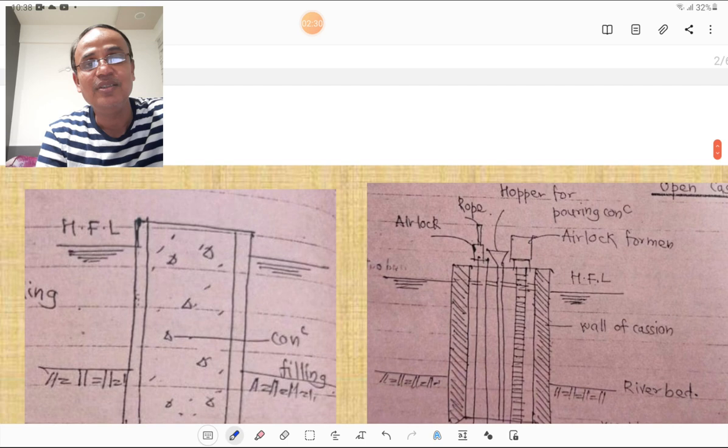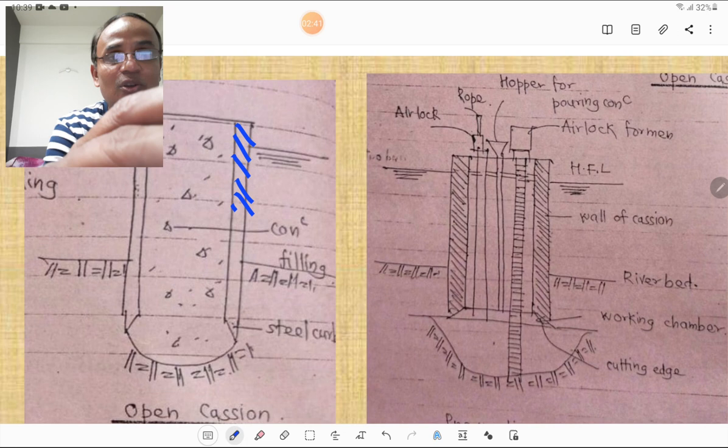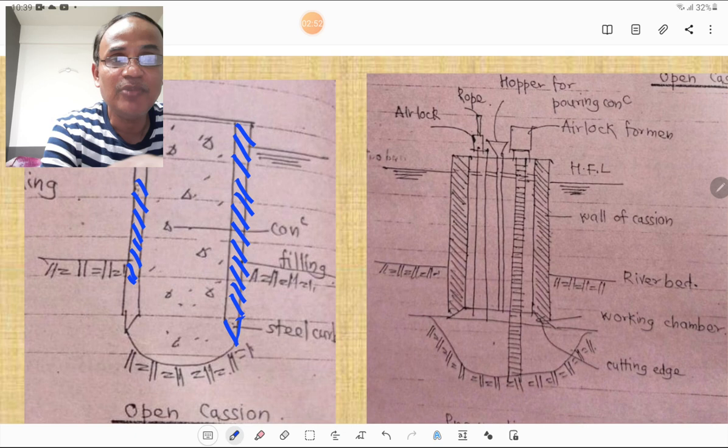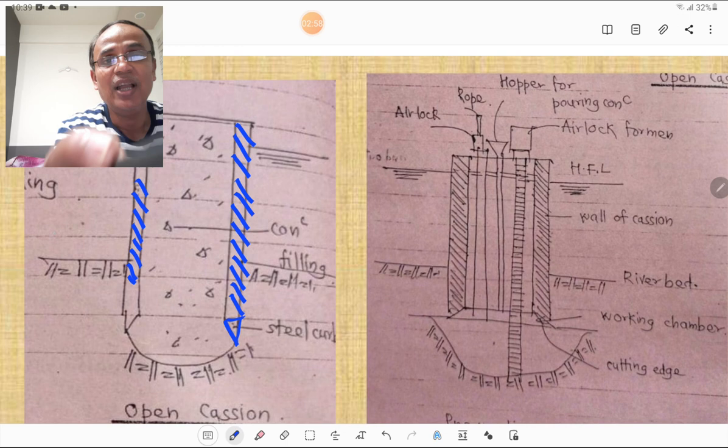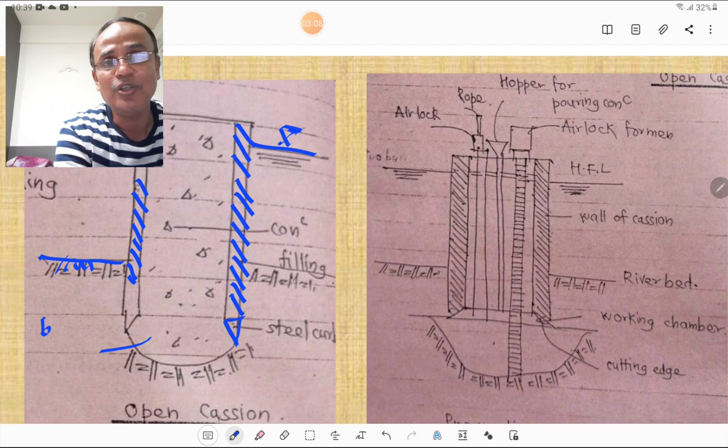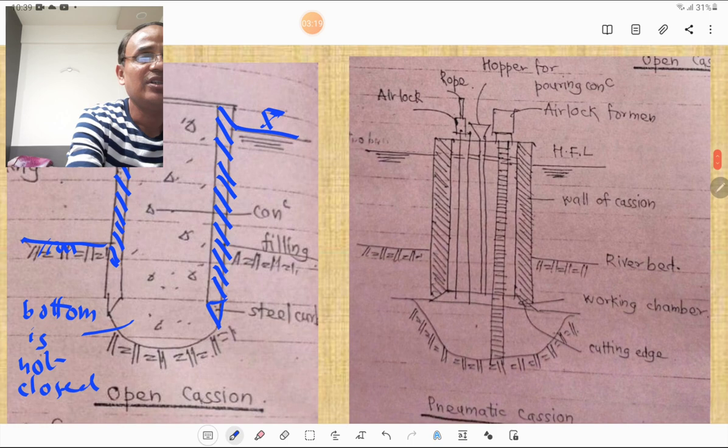Then we will see this second figure of open caisson. This is the caisson or caisson wall. This is another caisson. This is the cutting edge of steel curve. This is staining just like a well foundation. And this is the river bed. This is the HFL, high flood water level. And the bottom is not closed. In open caisson you must remember that bottom is not closed.